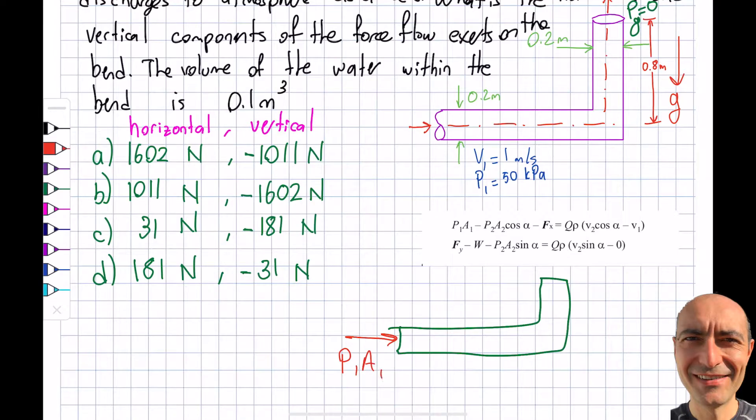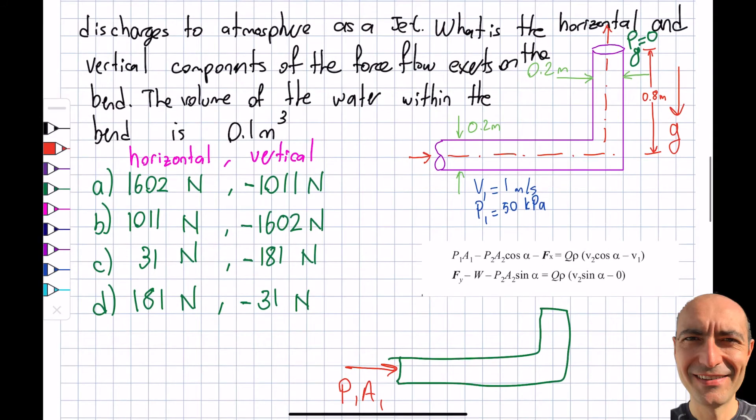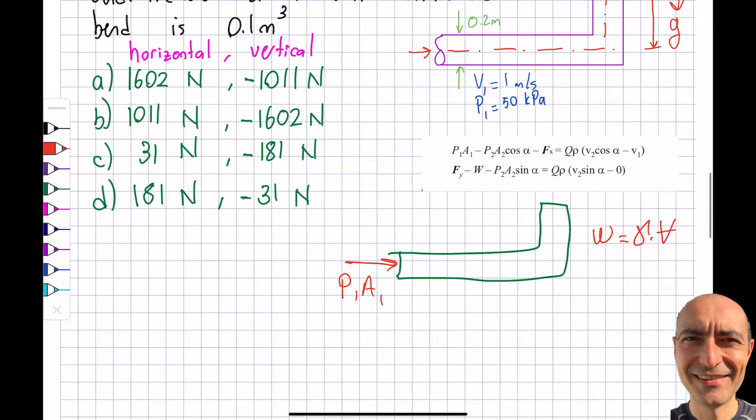So there will be P1A1 here because I know P1. P2 is 0 so that's not there. Then I will get the weight because I gave you the volume of the water within the bend. So the weight will be equal to specific weight times the volume. Then I will get myself Rx.